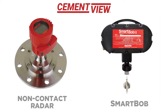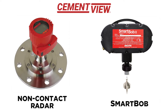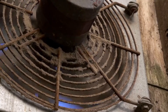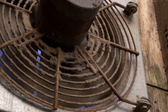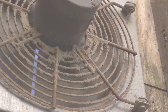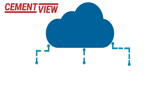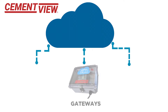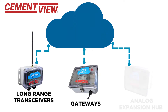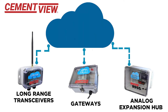CementView uses sensors such as non-contact radars or smart bobs to accurately measure levels of cement, sand, or fly ash even in the dustiest silos. The sensors send data to the cloud using gateways, long-range transceivers, or analog expansion hubs.